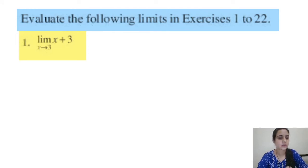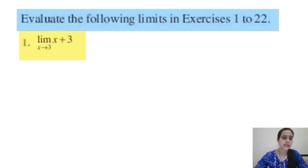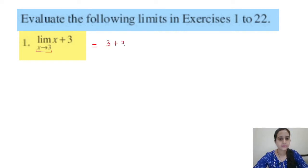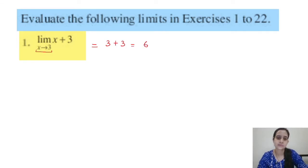Evaluate the following limits. Question 1: limit x tends to 3, x plus 3. You have to check that putting the value does not give a 0/0 form. We start with the direct substitution method. Putting x = 3: 3 plus 3 gives 6. We are not getting 0/0 form, so we apply direct substitution. Answer: 3 plus 3 equals 6.